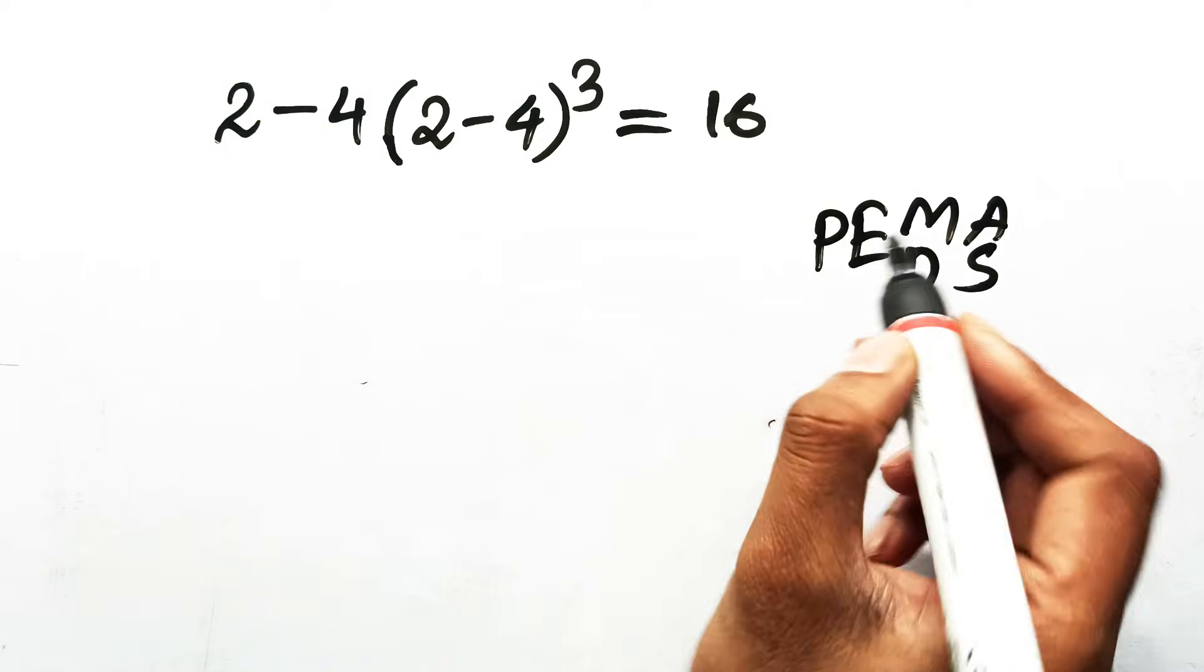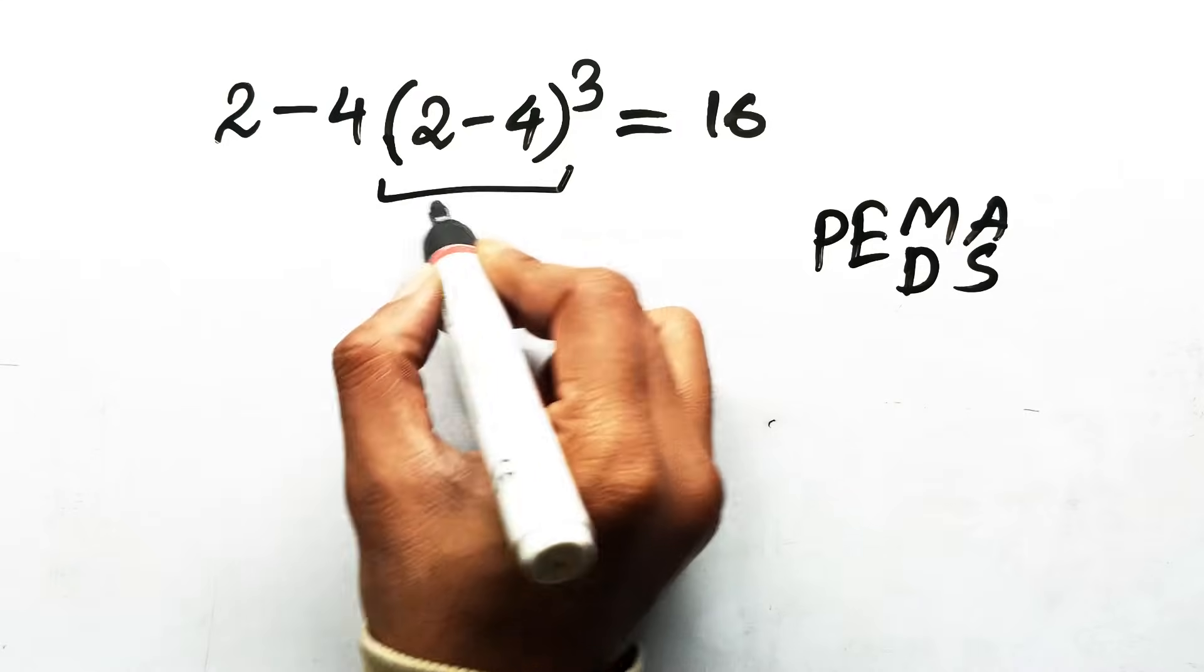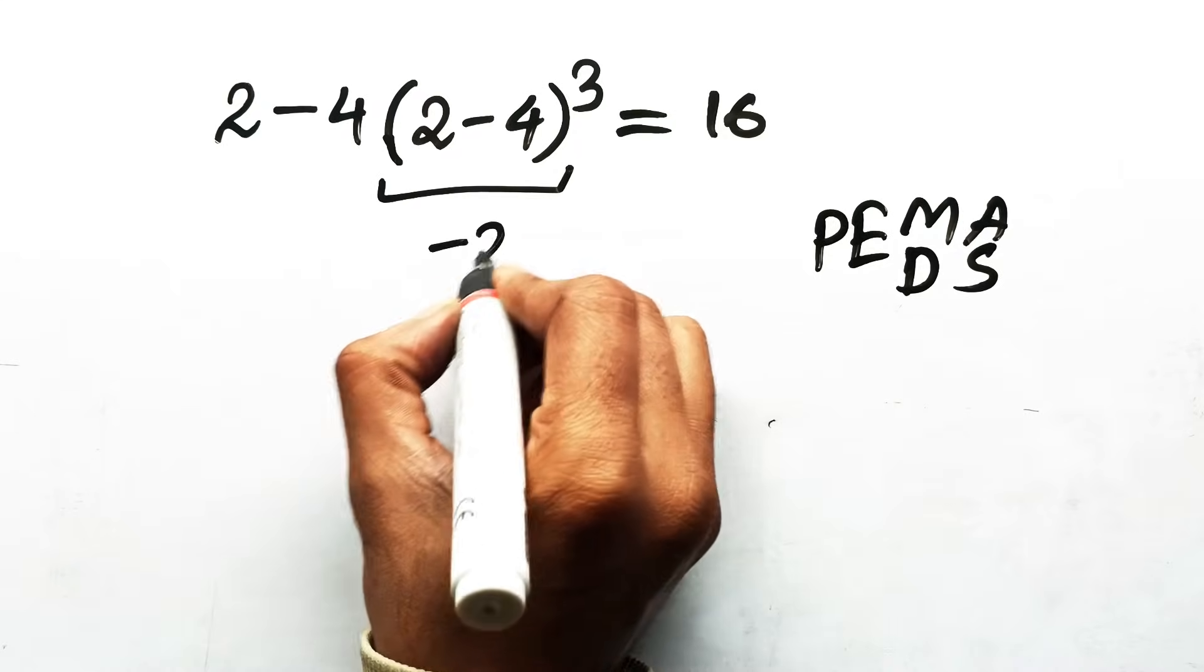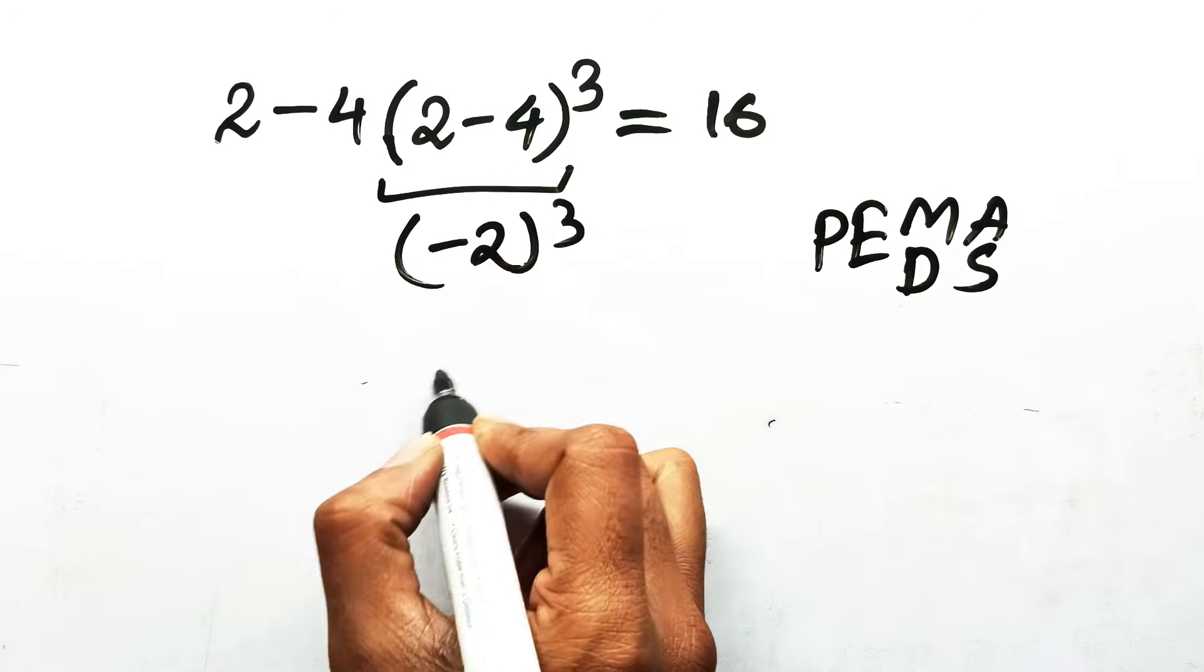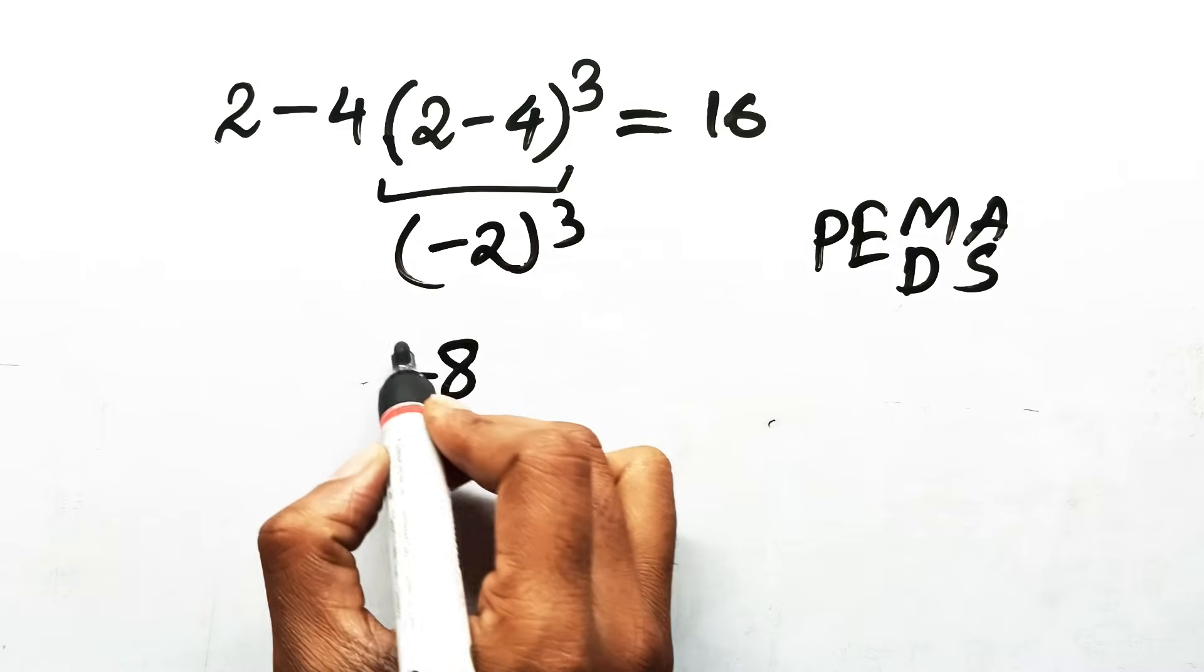Step 1 is parentheses. Inside we have 2 minus 4, which equals negative 2. Step 2 is exponents. Negative 2 cubed is negative 8. So far, everything is fine.